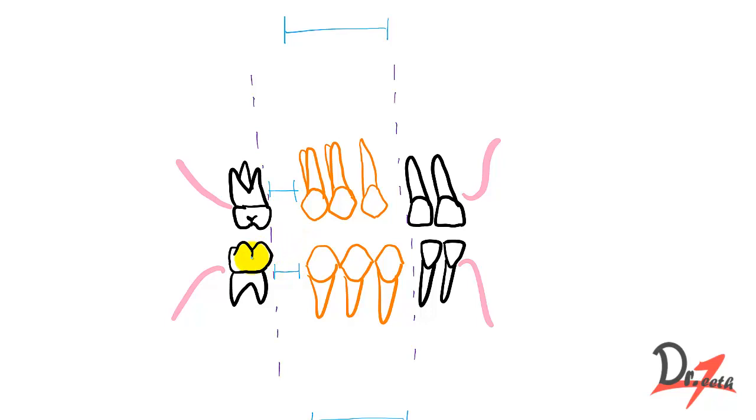In the maxillary arch, we have 1.8 mm, that means 0.9 mm on each side of the arch. And in the lower one, we have 3.4 mm leeway space, that is 1.7 mm on each side of the arch.